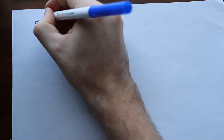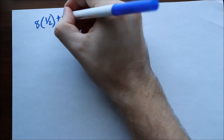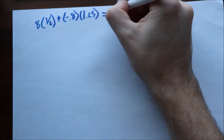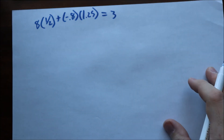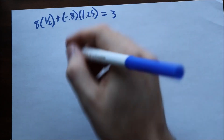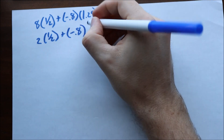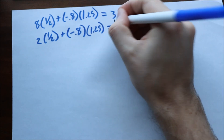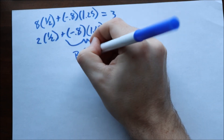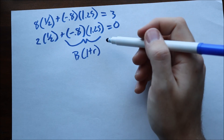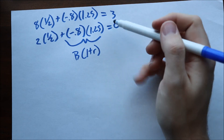Let's verify by testing our equations. For heads: 8 times 1/2, plus negative 0.8 times 1.25, equals 3. That checks out. For tails: 2 times 1/2, plus negative 0.8 times 1.25, equals 0. That also checks out. The B times (1 plus R) term is simply the amount you borrowed times 1 plus the interest rate — so if you borrowed $0.8 today, you pay back $1 in the future.